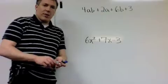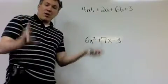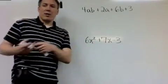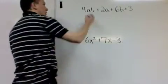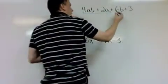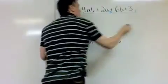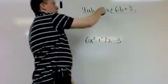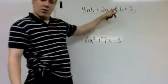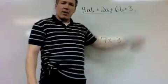Okay, so the method of grouping goes like this. Just group the first two variables and the last two variables together. Terms, I should say, not variables. So in this case, my first two terms are 4ab plus 2a, and my last two were 6b plus 3.